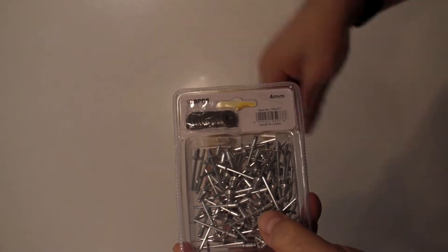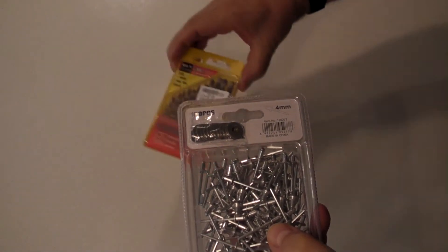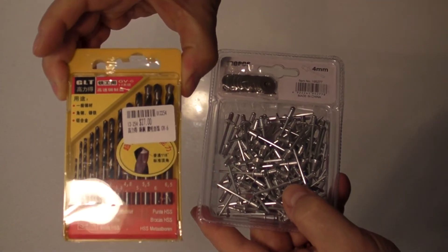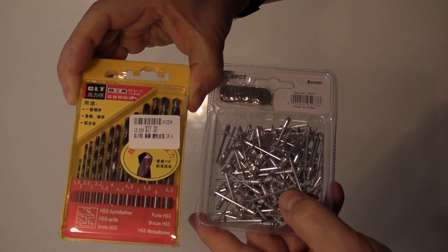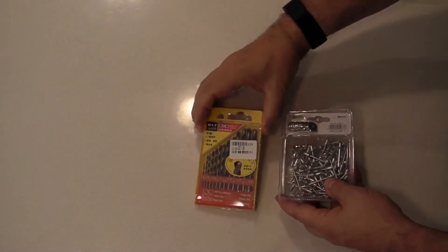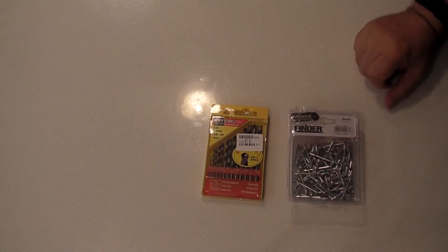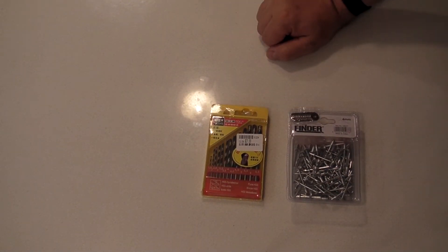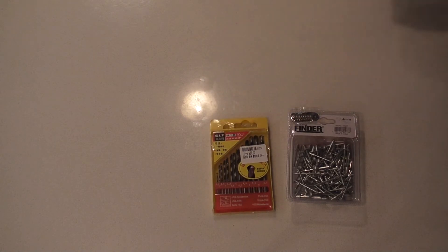These pop rivets are four millimeters in size. I got the washers as well that match that size, so I'll be able to use the four millimeter drill bit and four millimeter pop rivets to hold the sheet metal that I intend to put on top of the cabinets to protect their contents from the weather.